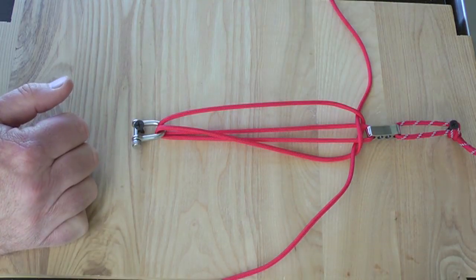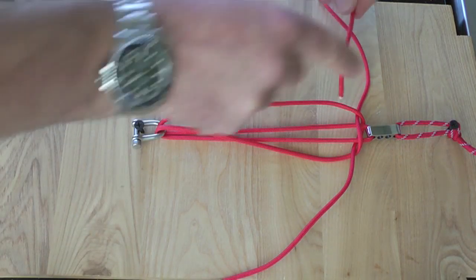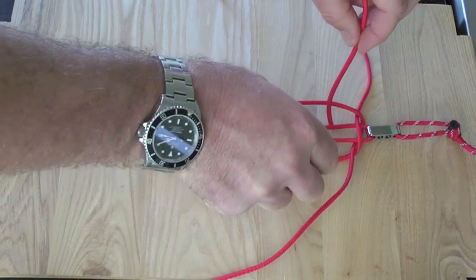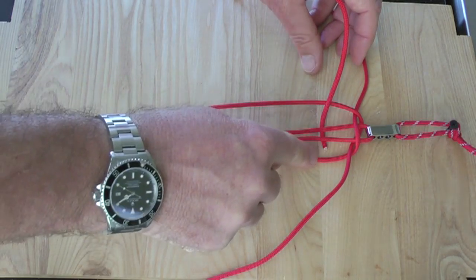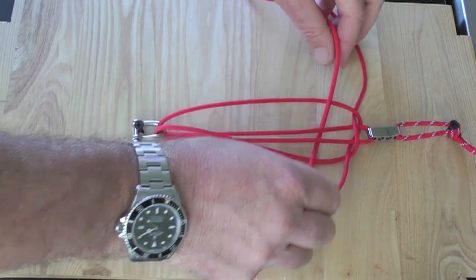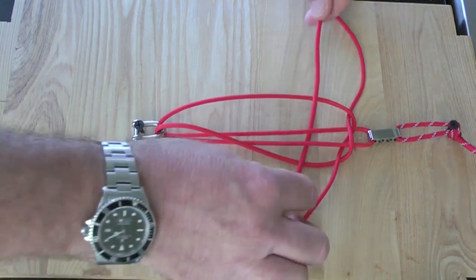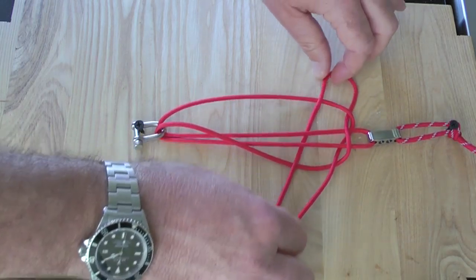Take the left-hand side rope, and feed it over the outside left cord, under the middle two cords, and over the outside right cord. I'll pull that down. And you can have something that looks like that.